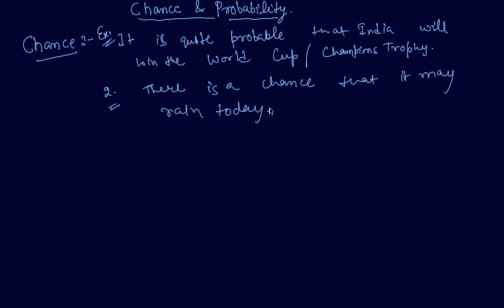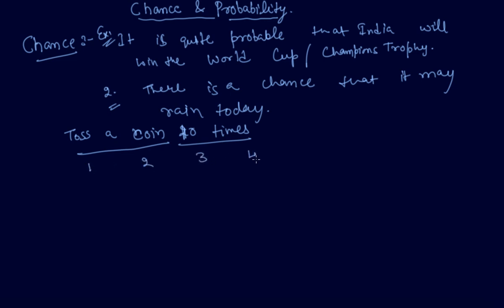The definition of chance varies from one example to another. If you toss a coin and you see the number of observations — say you toss a coin ten times — you write all the observations: one, two, three, four, five, six, seven, eight, nine, ten. In the first observation you get tail, second also tail, then head, tail, head, tail, tail, head, head, tail.